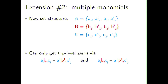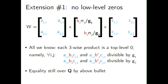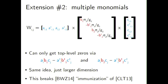Our second extension handles the case where zeros are obtained via linear combinations rather than direct products. Instead of a single encoding per set, we have pairs, and top-level zeros require subtracting two products. This poses a slight problem since we can't directly use the previous nice form — but we can handle it with a larger dimension, essentially growing the matrix size by the number of terms needed to get top-level zeros. This breaks one of the proposed immunizations to CLT13.